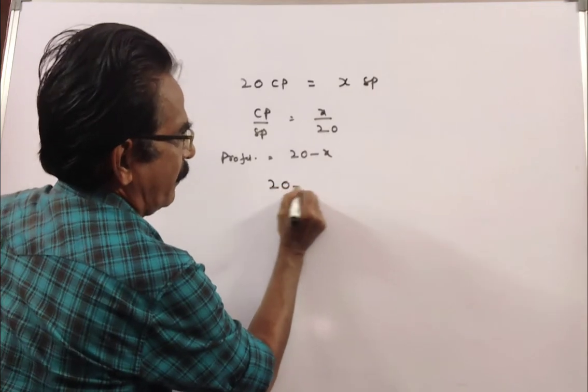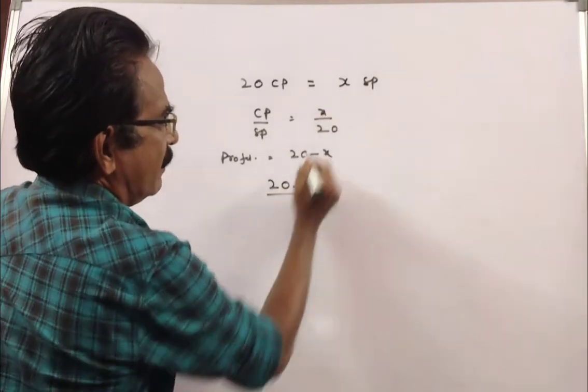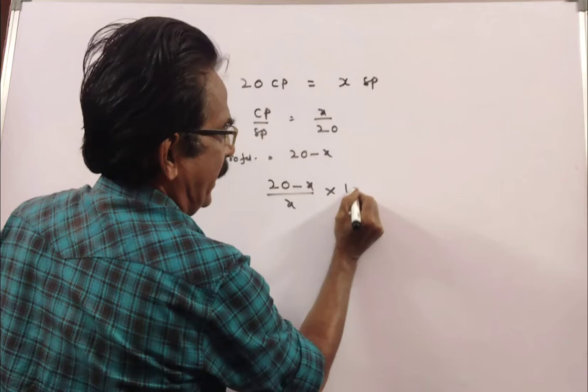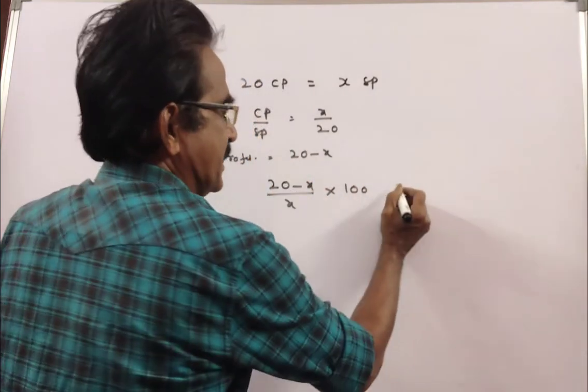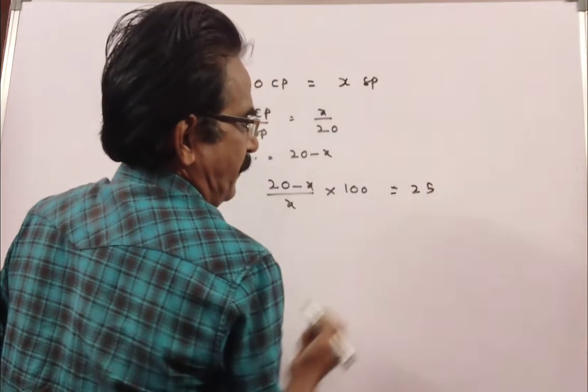Profit percent equals profit by cost price into 100. The profit percent is given as 25%.